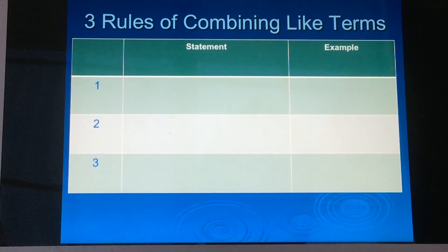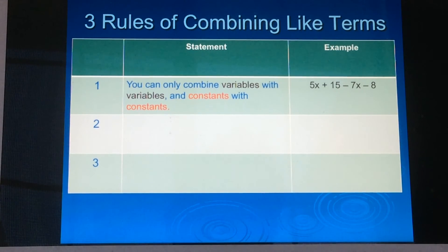So the first rule in combining like terms is you can only combine variables with variables and constants with constants. Okay. An example of that is over here, 5x plus 15 minus 7x minus 8. And I'm going to look and I'm going to say, okay, I see a 5x and I see a negative 7x. Those both have variables in them and they're both the same letter. And then I see a positive 15 and a negative 8. And those are both constants. So we're going to group them together and we're going to get 5x minus 7x plus 15 minus 8. And then I'm going to be able to simplify these and get the answer of negative 2x plus 7. My next question would be, can I simplify it any further? Since one is a variable of x and the other one is just a constant, no, we cannot. So we move on.